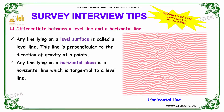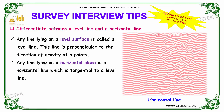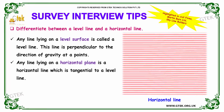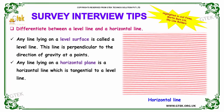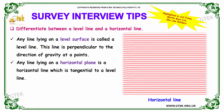Our next question is: differentiate between a level line and a horizontal line. Any line lying on the level surface is called a level line, and it is perpendicular to the direction of gravity at a point. Any line lying on the horizontal plane is a horizontal line, which is tangential to the level line. These patterns of questions are asked in interviews of Martell Limited and Skyline Builders.